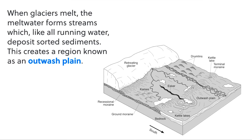When the glaciers melt, we get a lot of meltwater, which forms streams coming off the front end of the glacier. Like all running water, these deposit sorted sediments. The sediments deposited by the glacier itself are unsorted — that's our till, creating our moraines.